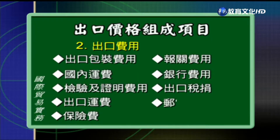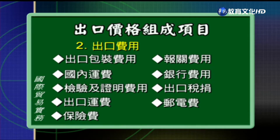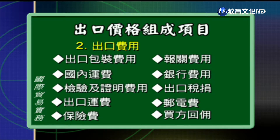这些费用属于出口税捐这个项目里面。第九个是邮电费，像是邮资、电话、传真、网机网路等等的电信费用，都是属于邮电费。最后一项是买方回佣，它是指应该要给买方或代理商的回佣、回扣或者是佣金。